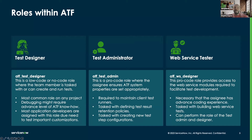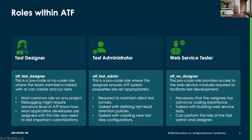The next role is the Test Administrator. This is a pro-code role where anyone assigned can actually manage the ATF system properties and set appropriate features on it. They are required to maintain client test runners. For example, if you're trying to set up a headless server or switch to a cloud runner feature, the Test Administrator is the one to help you do that. They are also tasked with defining the test result retention policy — how long you want to keep a test result, whether it's 30 days, 60 days, or a year.